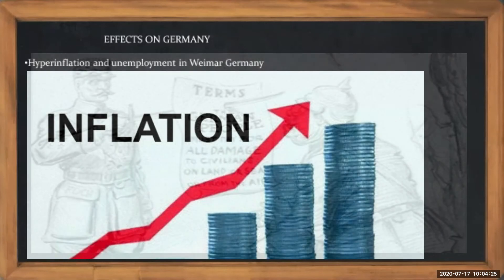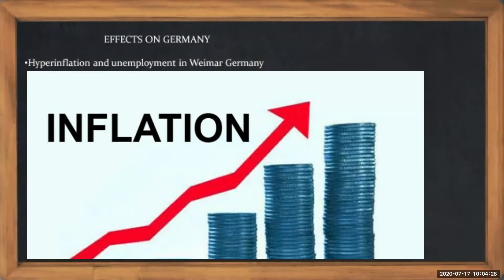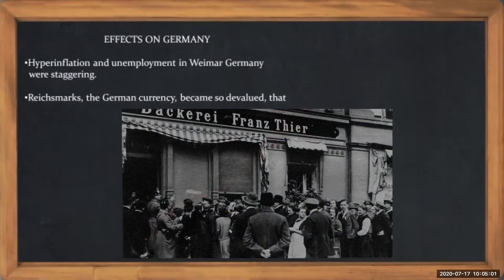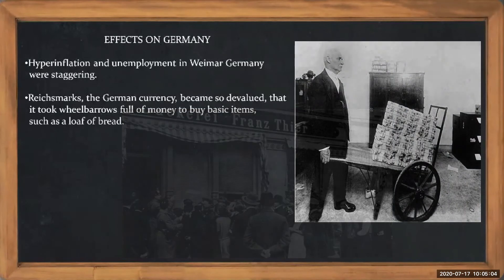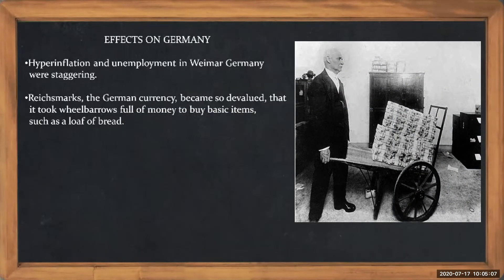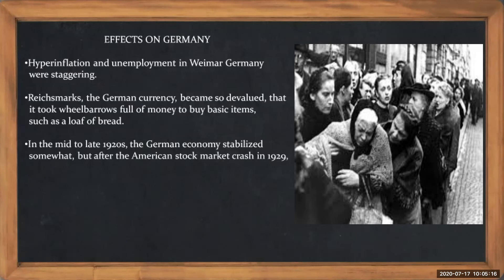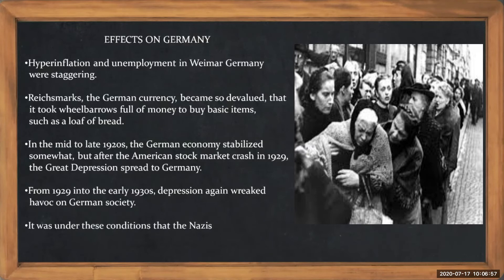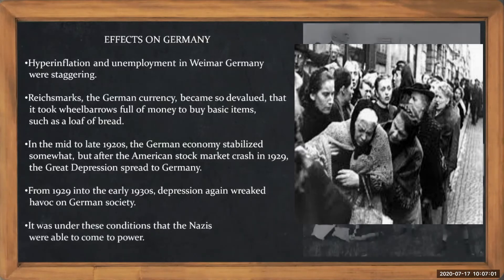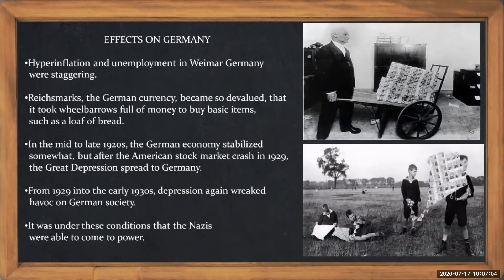Firstly there is hyperinflation — goods and prices became so high. And the next is unemployment. The effect was so staggering that even to buy bread, you had to take a whole basket or wheelbarrow — a thelagari — full of money to buy basic items such as even bread. It slowly recovered in about the 1920s, not because of their own efforts, but because everyone else also came down. Then the Great Depression also affected Germany, and under these conditions the Nazi party were able to come to power. Look at the pictures — anyone with this much amount of money could retire and even children started playing with it; money became like a toy.